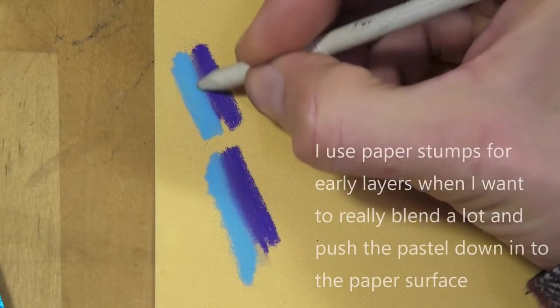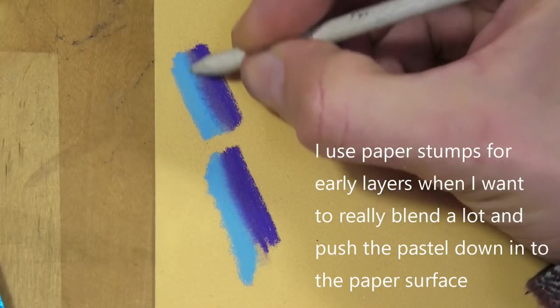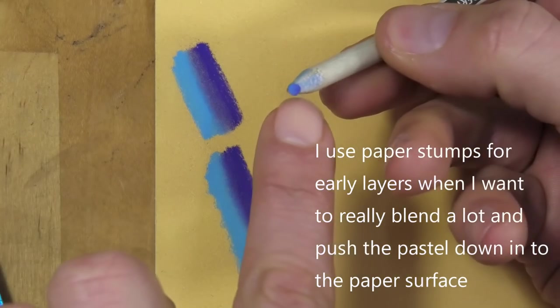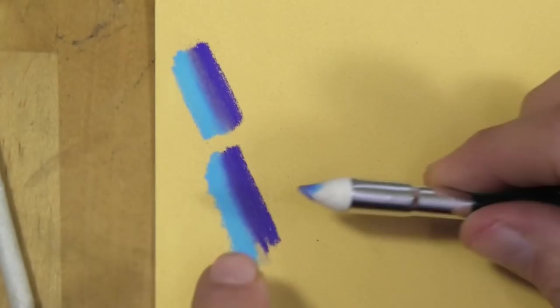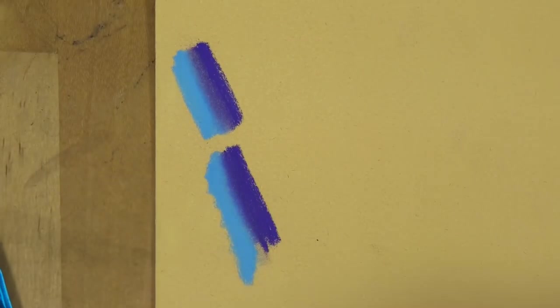I can also do that with a stump. The problem with stumps is that they seem to take a lot of the pastel away. Quite a bit seems to be on here as well, but for some reason it blends much more easily.